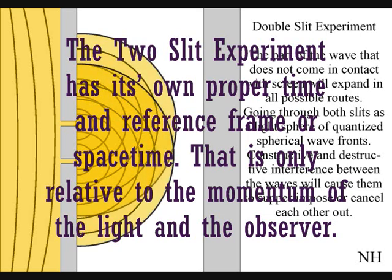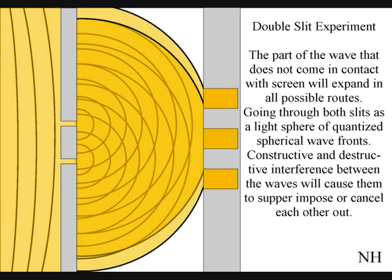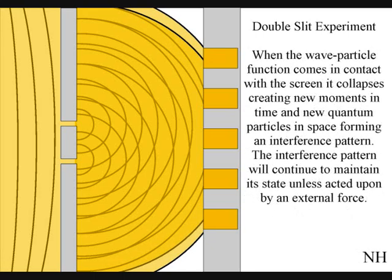Interference between the waves will cause them to superimpose or cancel each other out. When these waves come in contact with the screen, they will collapse, creating quantum particles in space and time in the shape of an interference pattern.